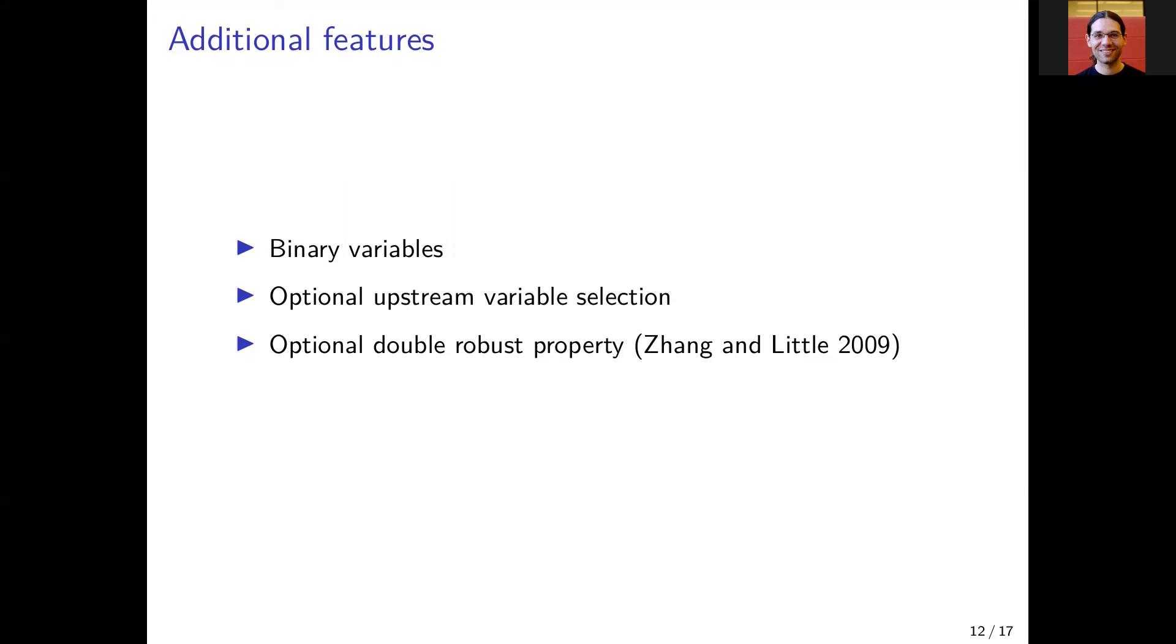There is also an option for including the response propensity score into the imputation model to receive the double robust property.